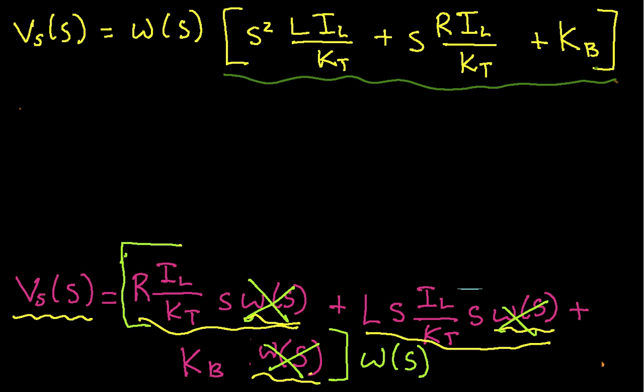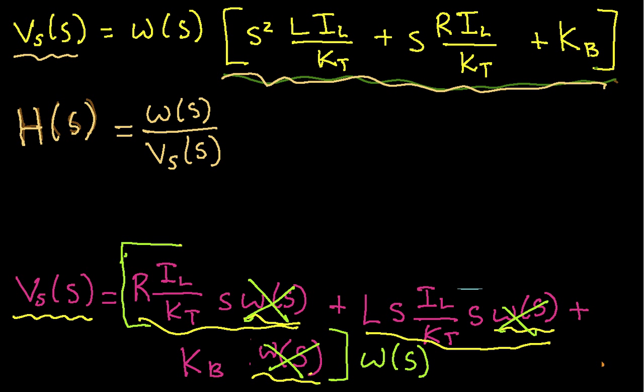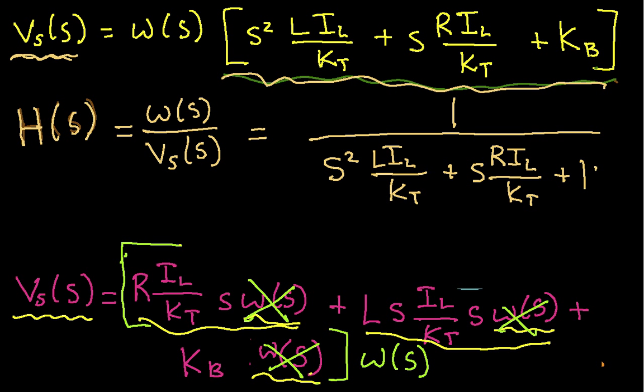Okay. Now again, to get the transfer function, h of s, here we'll actually write that in a brighter color since this is important. h of s is, again, omega of s over v sub s of s. So basically, if I divide through by this polynomial and also divide both sides of the equation by v sub s, I get this ratio of omega of s divided by v sub s of s is equal to 1 over this polynomial, s squared l i l kt plus s r i l kt plus kb.